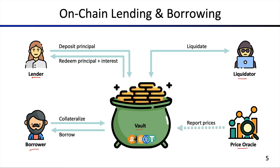What the lender typically does is first deposit a principal. The lender has a surplus of capital and would like that capital to work for them by generating interest. For the capital to generate interest, there needs to be a borrower who first collateralizes a security deposit so that the borrower can then take on a loan. For example, in some blockchain-based protocols you need to collateralize 150% of the value you want to borrow — MakerDAO is a famous example.